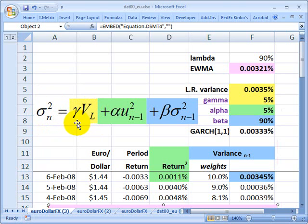First, each of the terms have a weight. You recall in the exponentially weighted moving average, we had two weights, lambda and one minus lambda. The weights must sum to one. In the GARCH, we're going to have three weights represented by Greek letters. Gamma is a weight, alpha is a weight, beta is a weight.